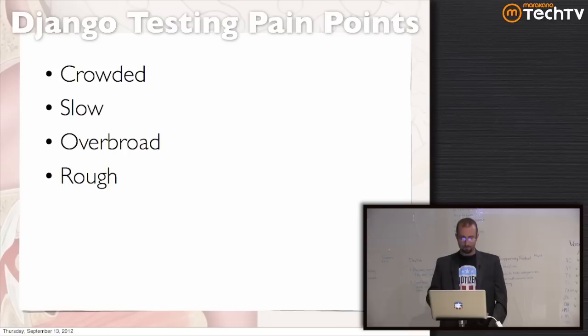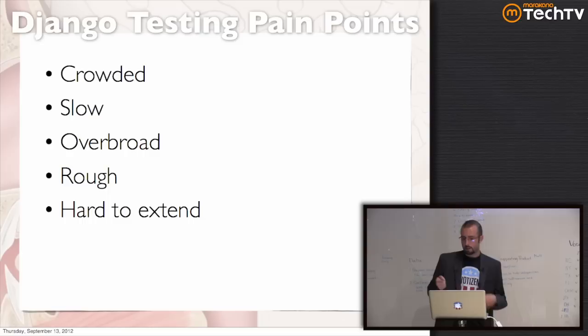Finally, the extensibility story is kind of unscalable. If you make a Django test runner subclass that does XML output, you can't just mix in somebody else's that limits you to testing just the applications that are yours. Not easy to compose those.